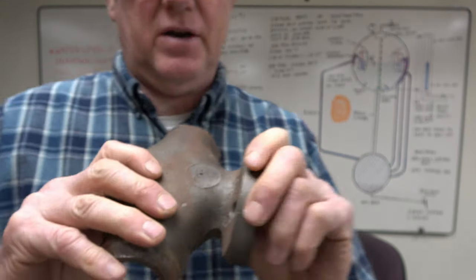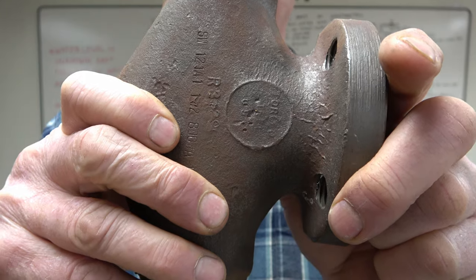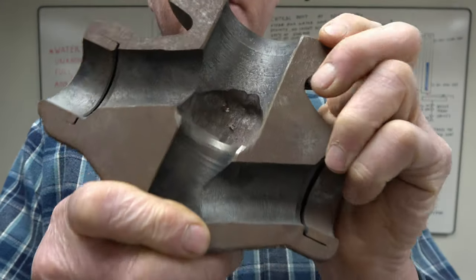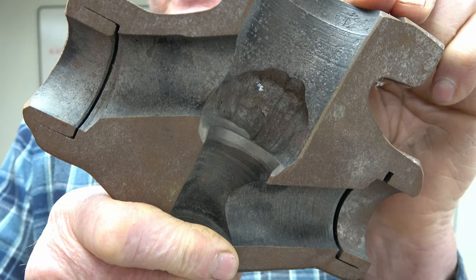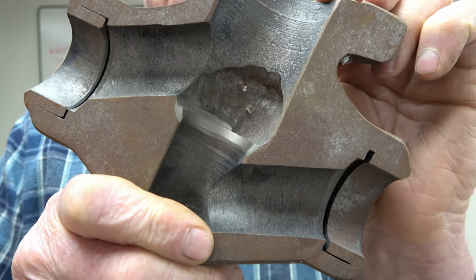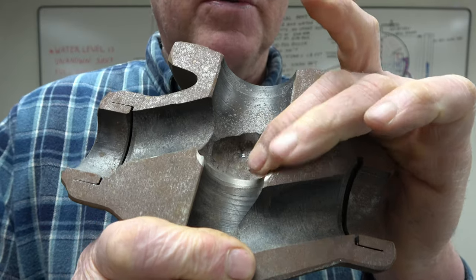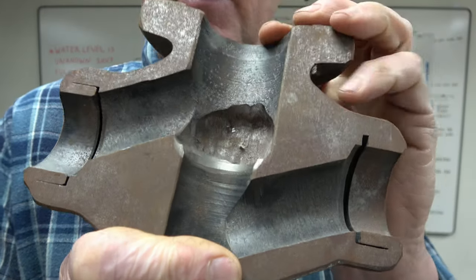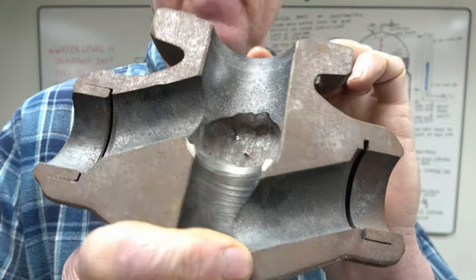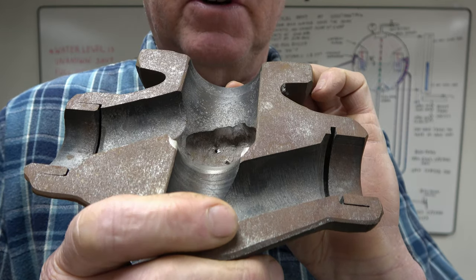Here's another valve that had started leaking out the side of it. As you can see it has substantial erosion damage on the upstream side of the seat. I don't know if the valve wasn't closed right, leaking through a little bit, but it cut through the valve body.